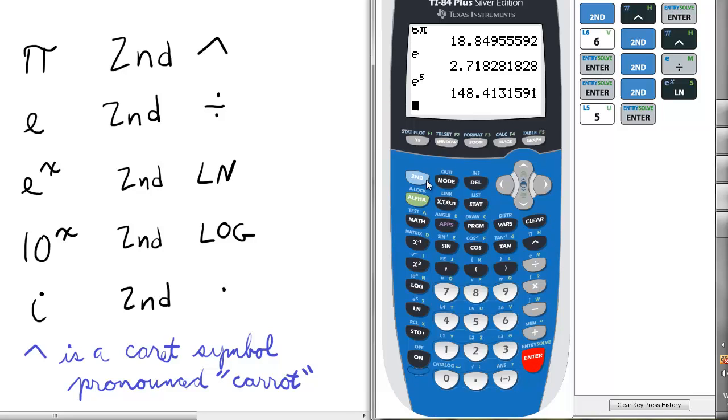Now, if we're doing a lot of logs or work with scientific notation, we need to raise 10 to the x quite often. To access that, we press second and log for 10 raised to a power. Let's see what 10 raised to the fifth equals. So 10 raised to the fifth is 1 followed by 5 zeros.